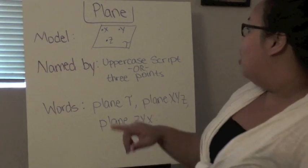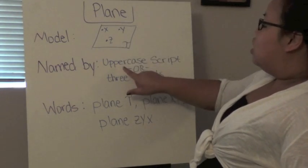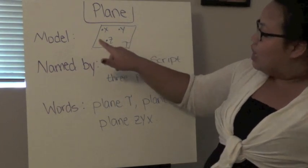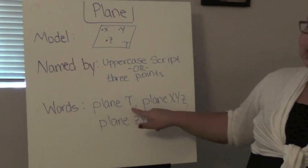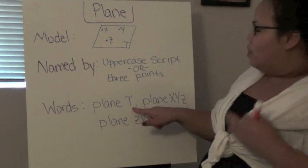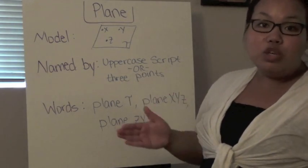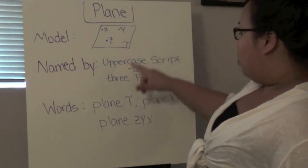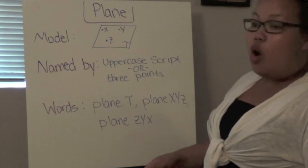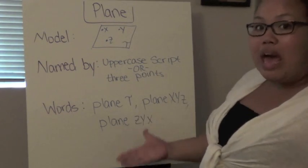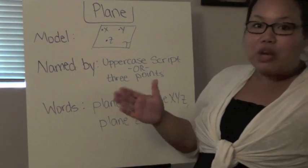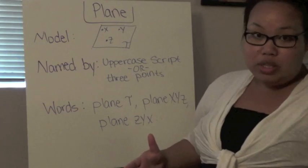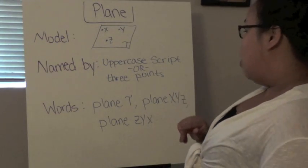There's two ways in labeling that as well. The first one is to do an uppercase script, so uppercase cursive. In this case, this is our T. So I can label this plane, plane T. Another way to do it is three points. The line is any two points, this one is any three points. And in any combination again. So it could be plane XYZ. Or you can say plane ZYX, plane ZXY, anything. Be creative, feel free, it doesn't have to be a certain order. As long as it's how many points? It's three, so please make sure to take note of that.